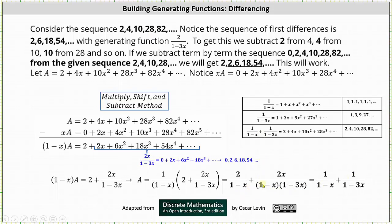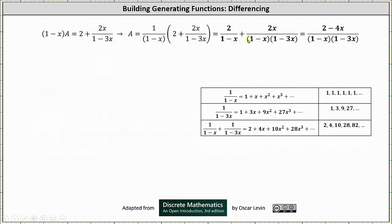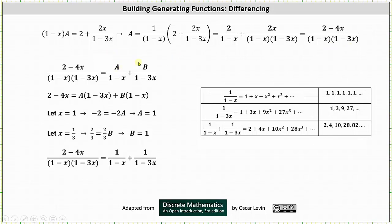To show that it's equivalent, we would have to add these two fractions together and then perform partial fraction decomposition. The first step is to add the two fractions together by obtaining a common denominator, which gives us the quantity two minus four x divided by the product of one minus x and one minus three x. Now we perform partial fraction decomposition. Here's all the work setting this up and solving for A and B. We do get A equals one and B equals one, showing the function found using the technique of differencing is equivalent to the function found by summing the generating functions in the previous lesson. So the two generating functions are equivalent.